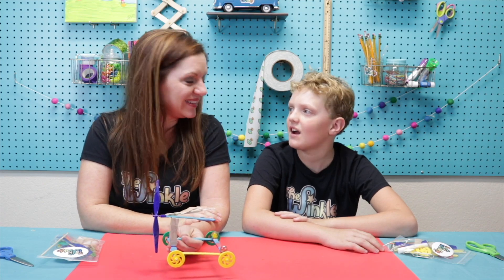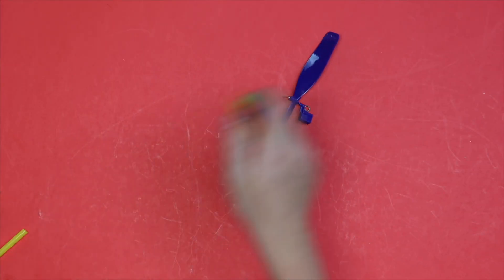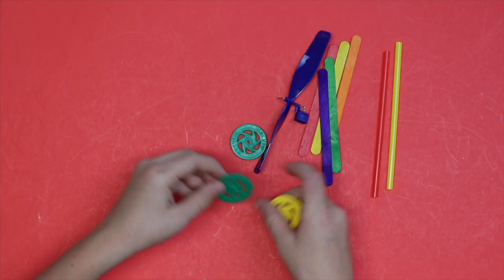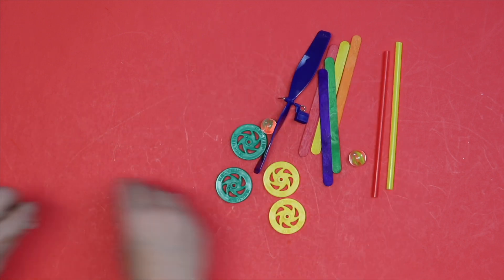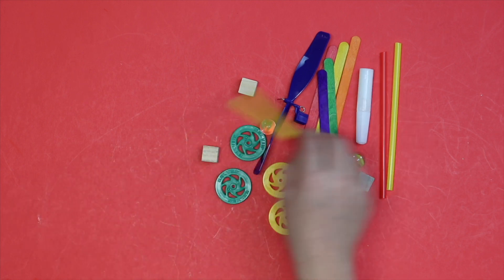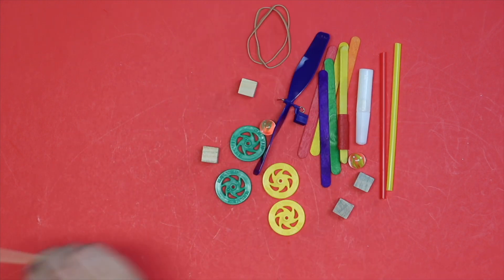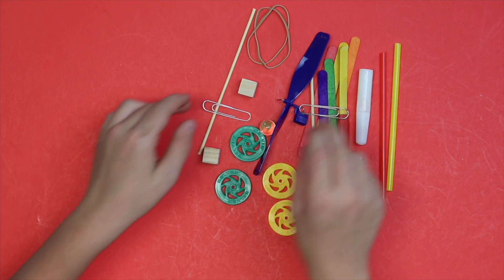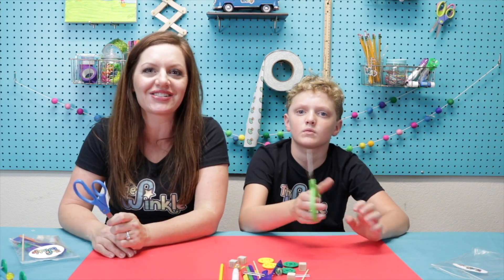Should we see what's in our kit today? A propeller, five popsicle sticks, a straw, two straws, four wheels, two marbles, four cubes, glue, tape, rubber bands, two skewers which will be our axles, and last but not least, two paper clips. On top of everything in your kit today, all you'll need is a pair of scissors and then we're ready to get started.